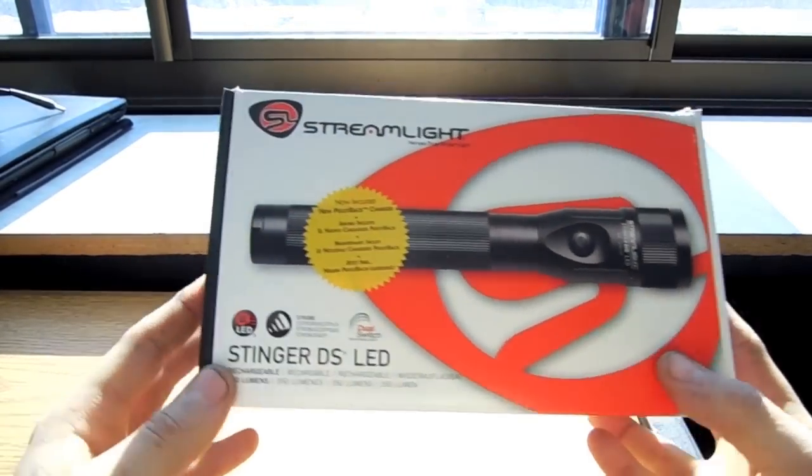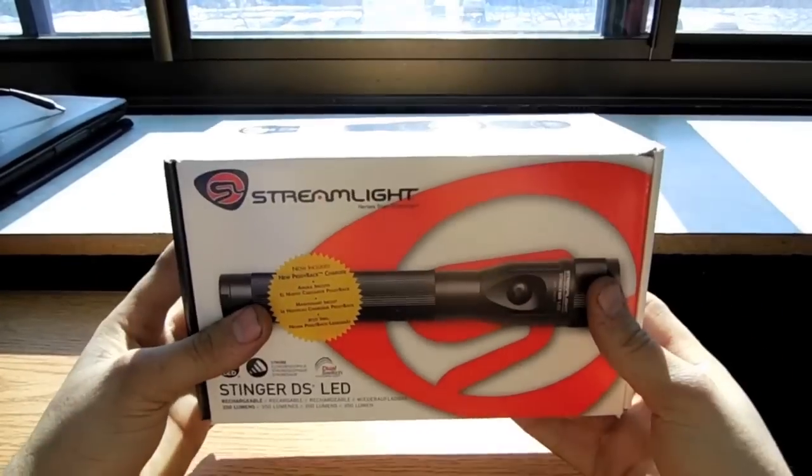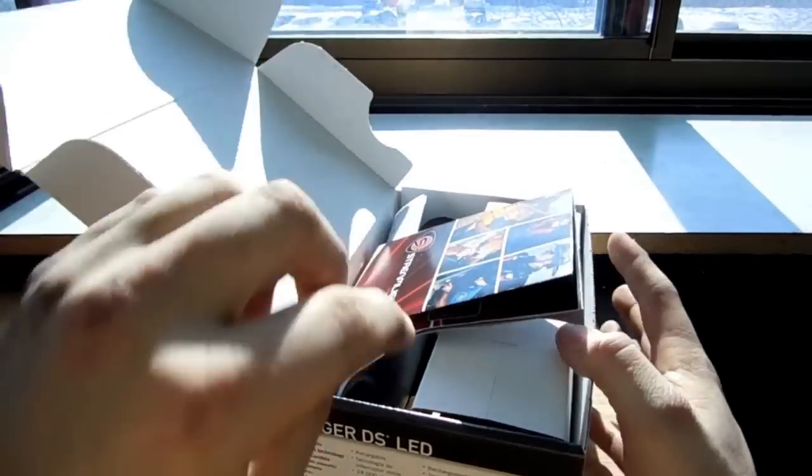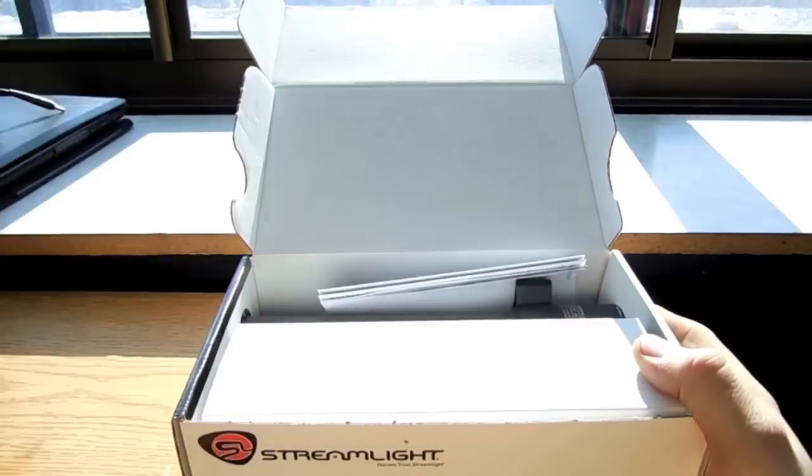As you can see, this is the Streamlight Stinger LED. The Stinger LED line is not too new, but it is new to the past two years. Normally it's just been incandescent.